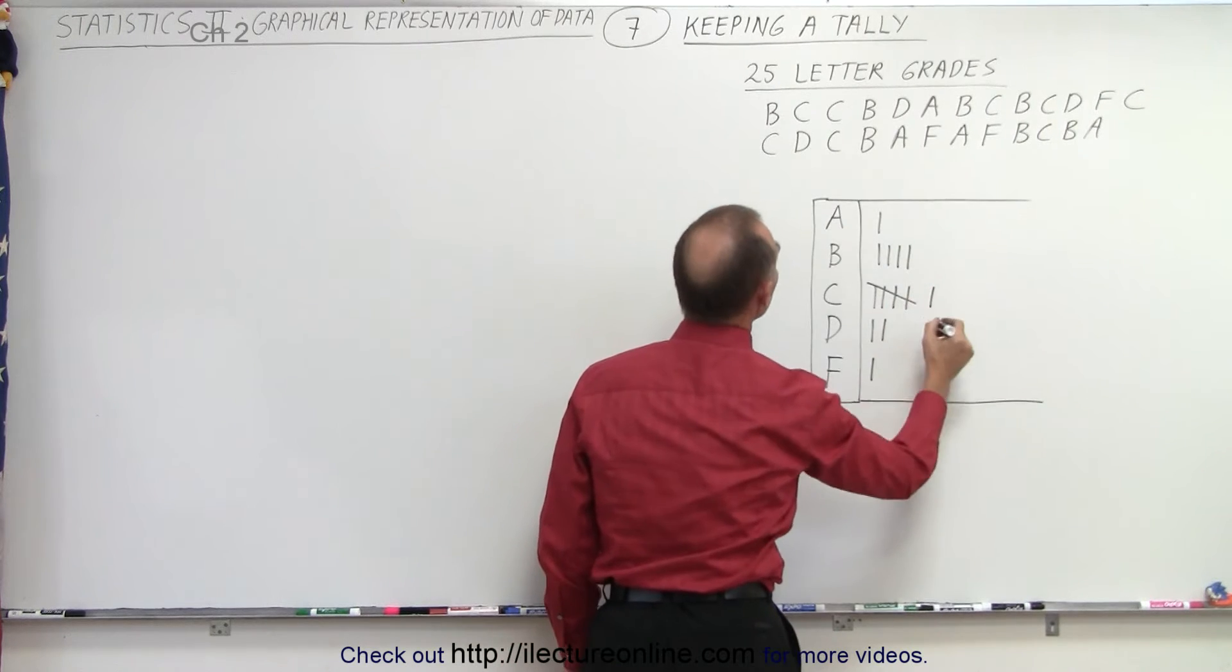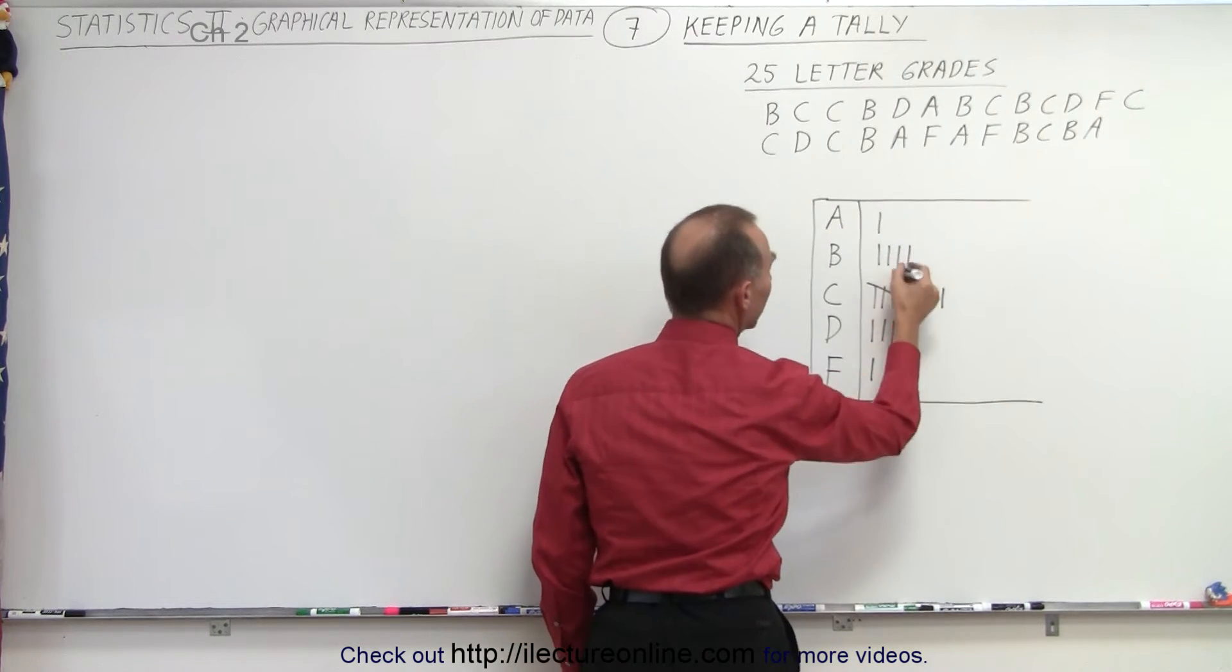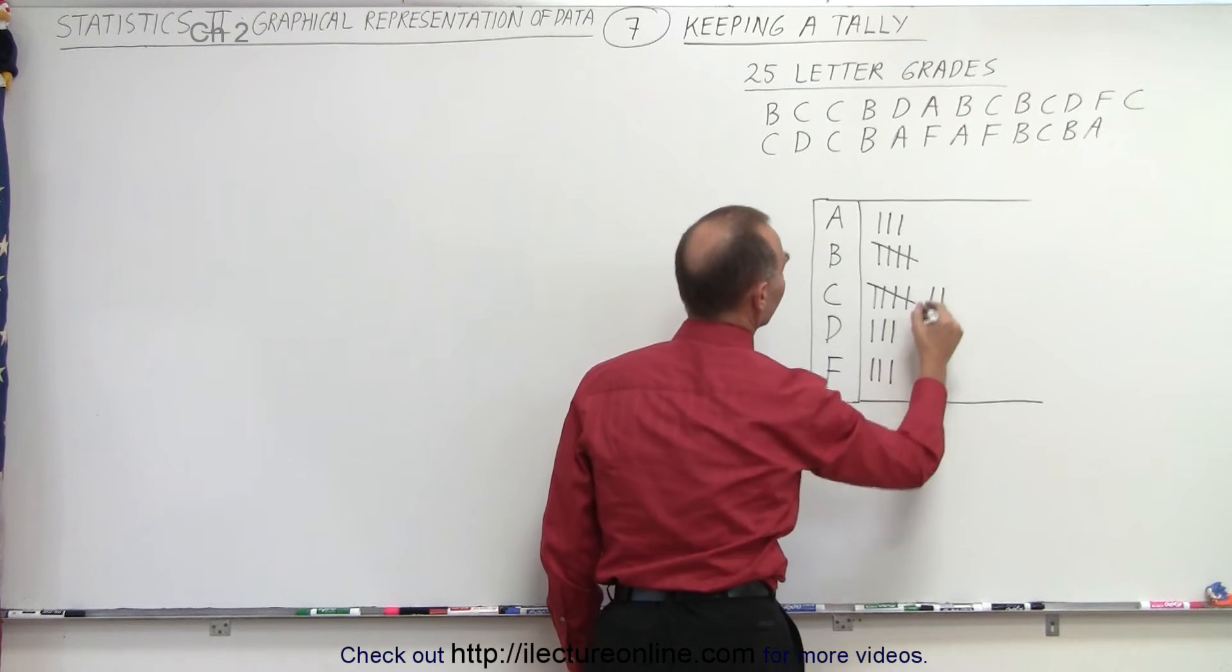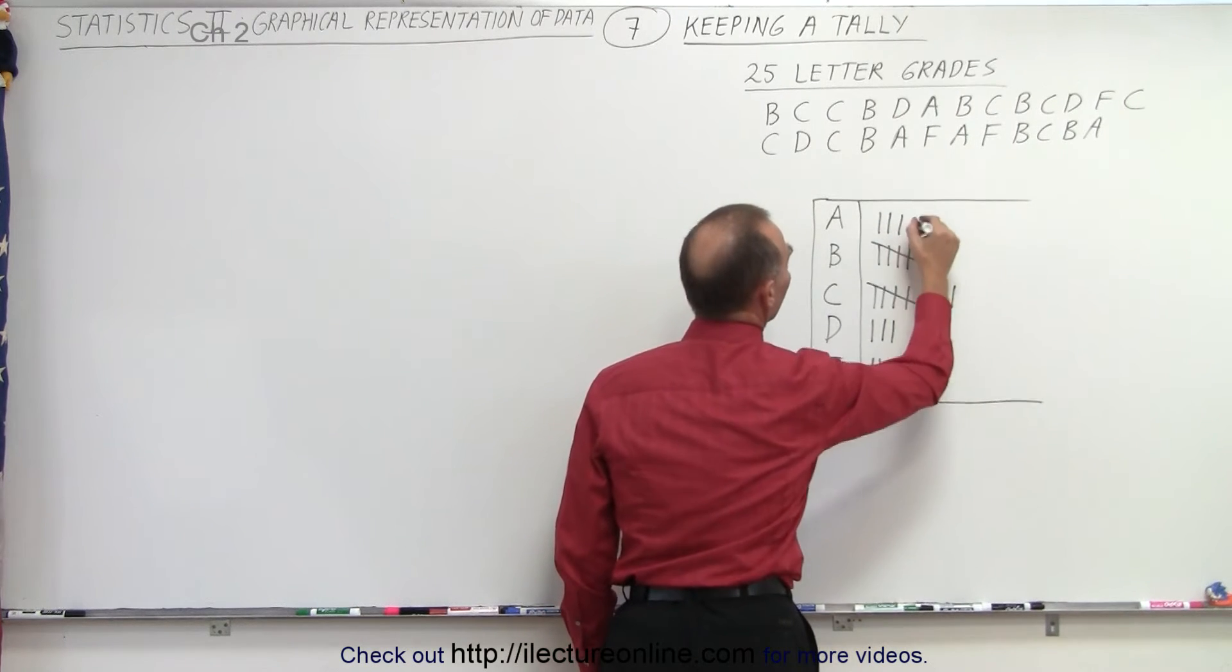So now we go over here. We have another C, a D, another C, a B. Again I draw a line across from my fifth B. Another A, another F, another A, another F, another B, another C, another B, and another A.